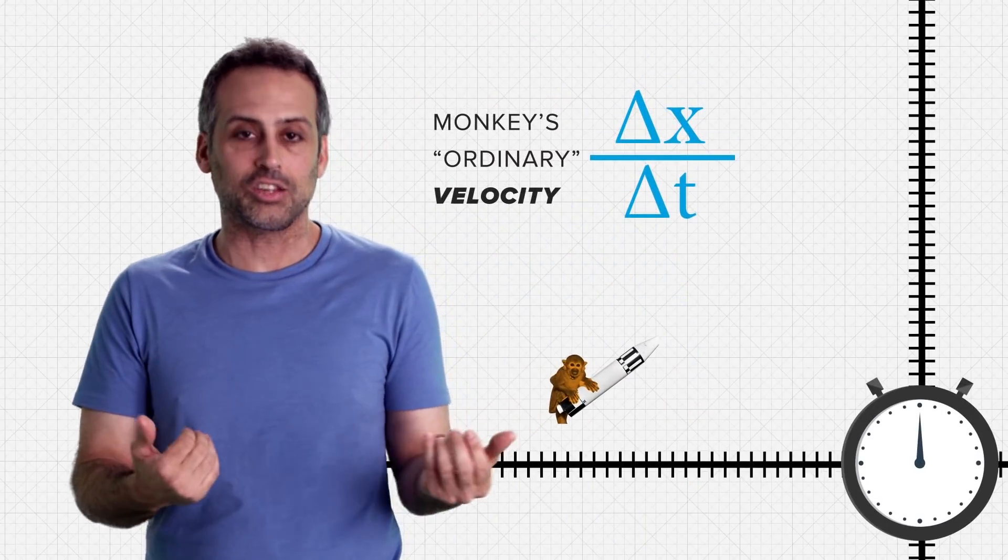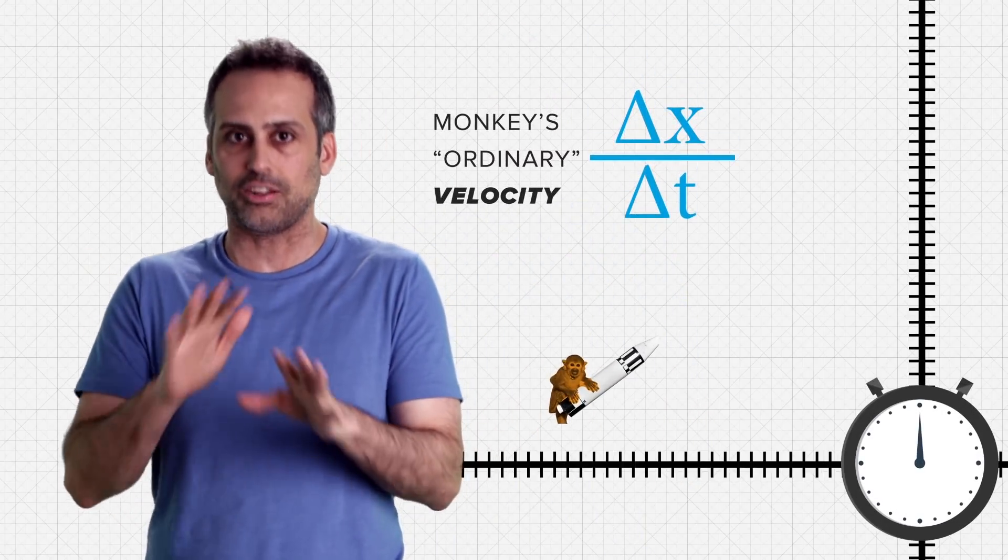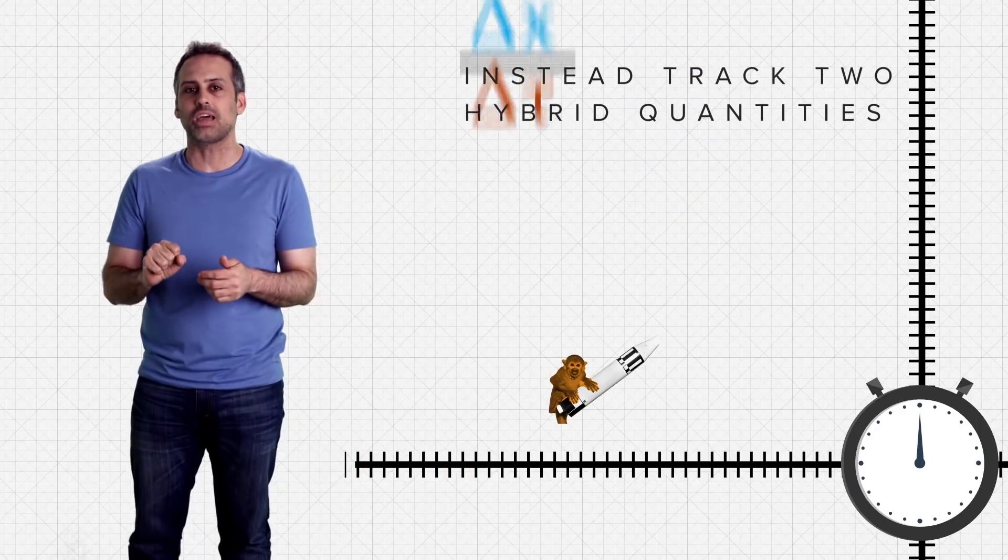Well, without justification, which would take us too far off topic, here's what turns out to work. Instead of tracking changes in the monkey's position on my axis with respect to ticks of my clock, that's ordinary velocity, I'm going to track two hybrid quantities instead.